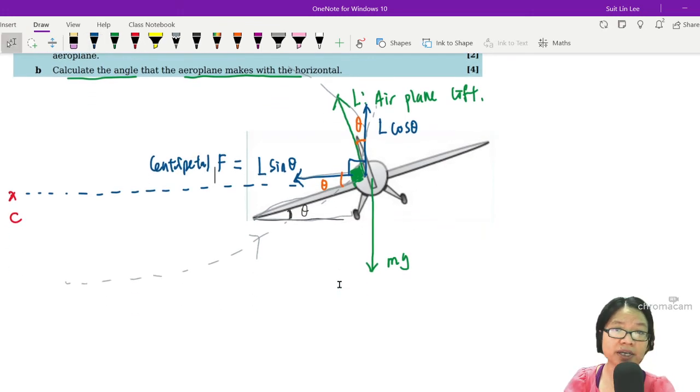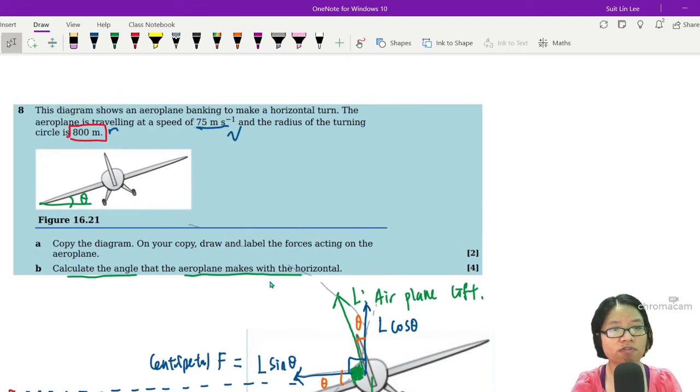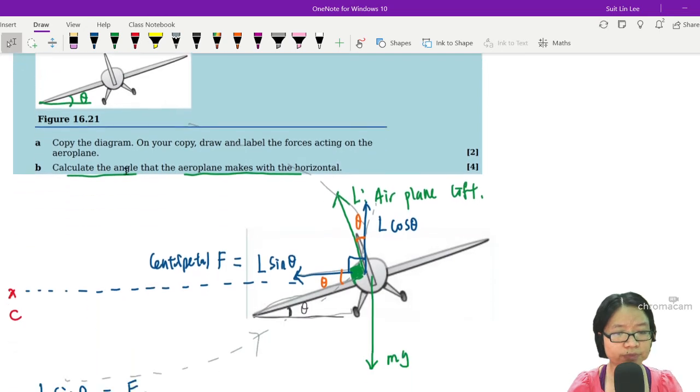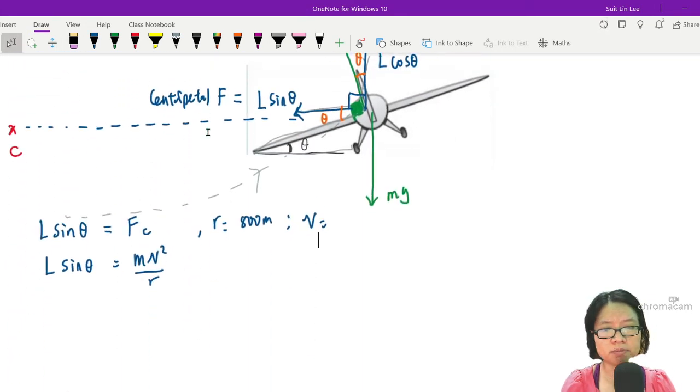So we are asked to find theta. The next step will be to write equations. L sin theta will provide centripetal force, so it will be equal to Fc. In this case, L sin theta will be equal to mv squared over r, because I'm given the value of v and r. I am given r as 800 meters and v was 75 meters per second. Good news, in SI, no need to convert.